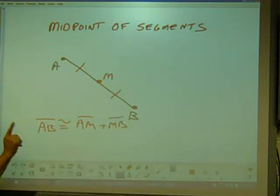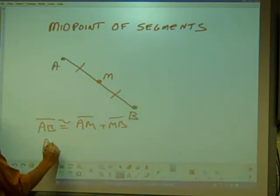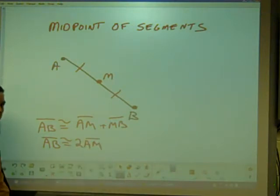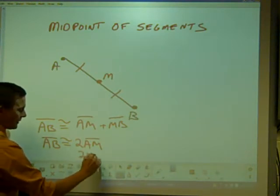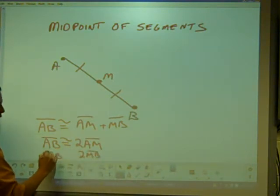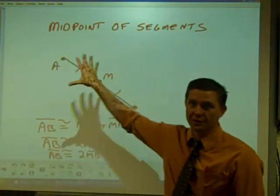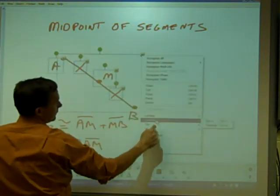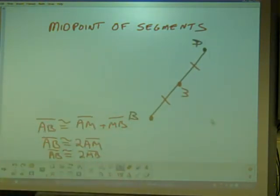But more importantly, any time you have a segment and you have a midpoint, you can skip right to this statement: it's two times one of the shorter segments, either two times AM or two times MB. These are all congruent relationships. The orientation doesn't matter - if I rotate the line all around, M is still the midpoint and these equations still remain true.